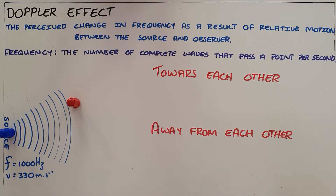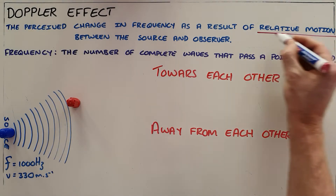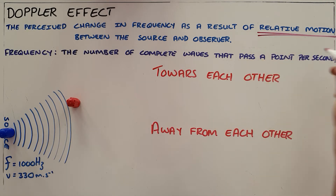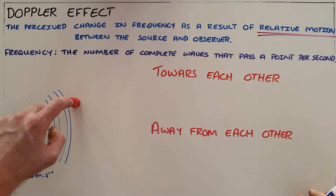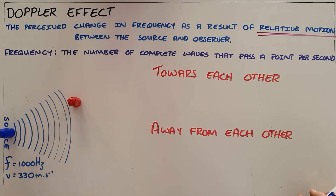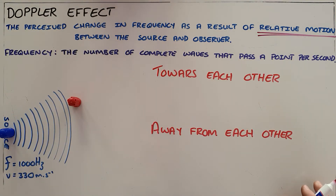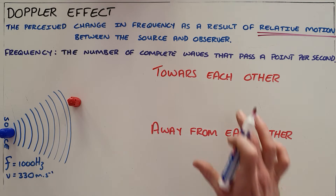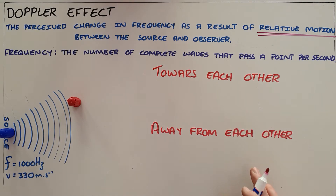What the Doppler effect tells us is that as soon as there is relative motion between the source and the observer, the frequency that the observer hears or detects is going to change — and there are two ways in which it can change.